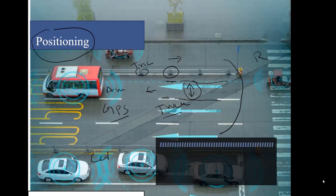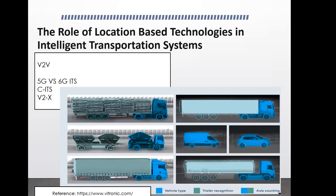Through the positioning system for ITS, it is also important that experts gain a better idea of where a specific vehicle is moving. The system can also determine if someone is moving in a zigzag path or violating traffic rules. Now, to understand location-based technologies in ITS, today I will also explain the role of 5G and 6G in ITS.